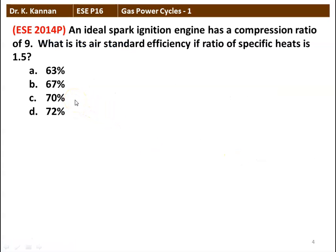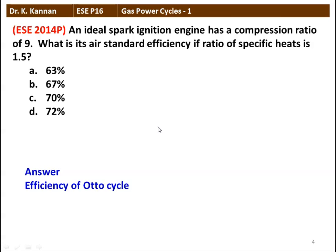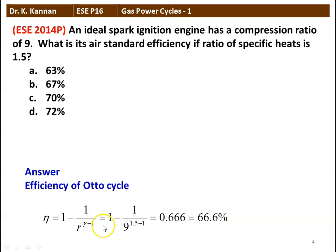Next question from the 2014 question paper. An ideal spark ignition engine has a compression ratio of 9. What is its air standard efficiency if the ratio of specific heats is 1.5? There are 4 options given. The efficiency of the Otto cycle: eta equals 1 minus 1 by R to the power gamma minus 1. Substituting: 1 minus 1 by 9 to the power 1.5 minus 1, where gamma is 1.5 and compression ratio is 9. Calculating, it is 0.666, which is 66.6 percent. The correct answer is option B: 67 percent.